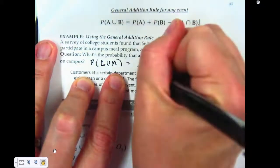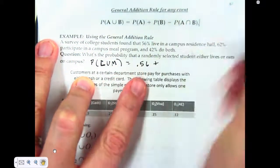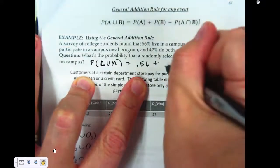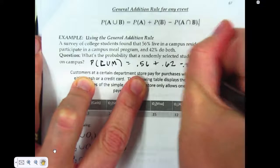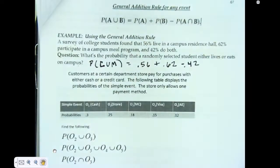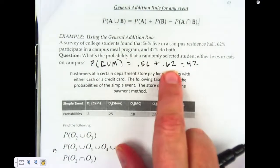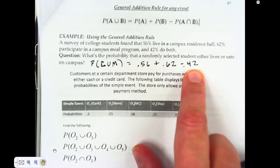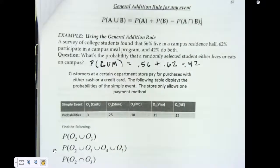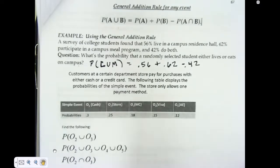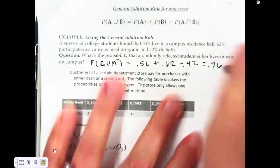The probability that someone lives on campus is 56%. To that, I add the probability of the meal plan, and from that, I subtract the probability of both. That's my rule there. I just plug them into that formula: probability of living on campus plus probability of meal plan minus the probability of both. If I didn't subtract the 0.42, my probability would have been 1.18. That's why it's necessary to subtract both.